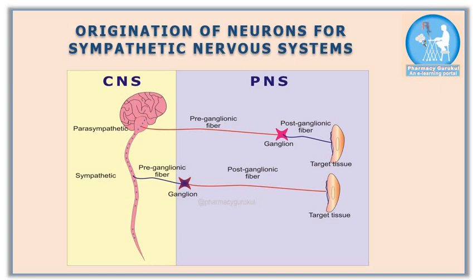Whereas the parasympathetic preganglionic nerve fiber is longer and the postganglionic fiber is shorter. Due to this, they have a slower response. As you know, the parasympathetic nervous system is also known as rest and digest, so it doesn't matter how slowly your digestion takes place.